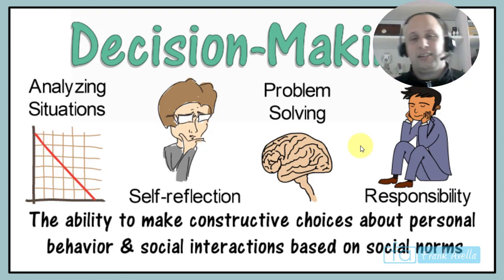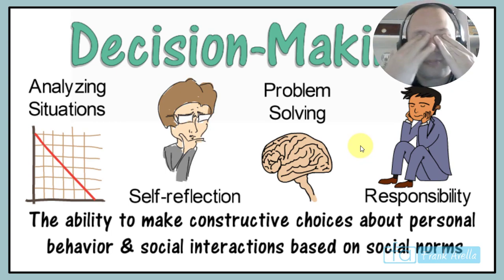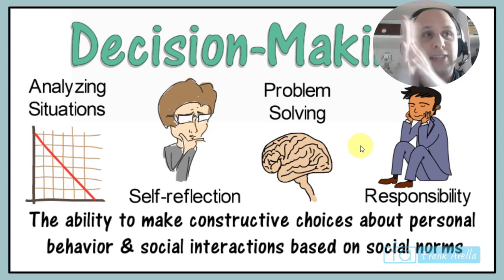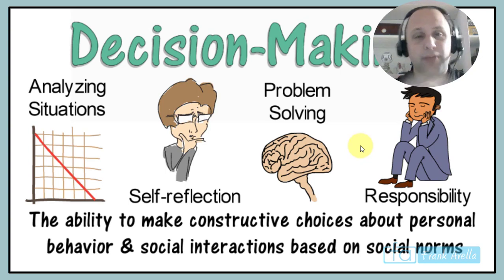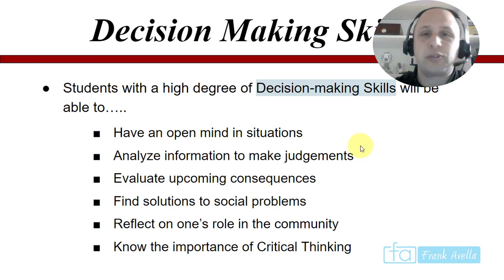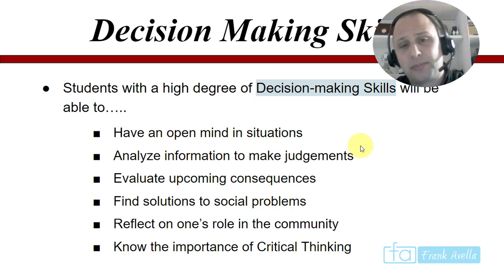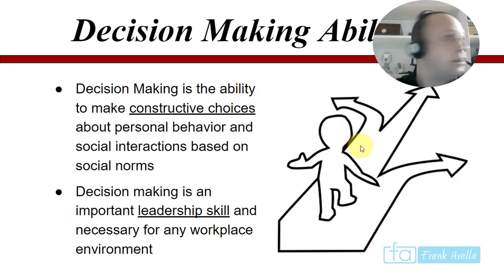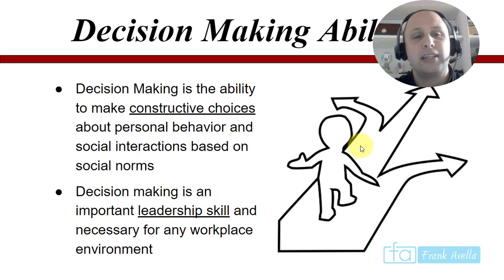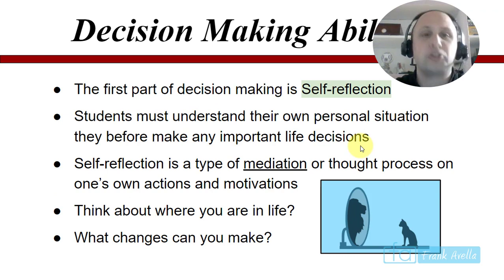The last competency is decision making. Students with a high degree of decision making will be able to have an open mind, analyze information and make the right judgments, find solutions to social and complex problems, reflect on their own role in the community, and know the importance of critical thinking. Decision making is the ability to make constructive choices about personal behavior and social interactions. It's an important leadership skill, necessary for any workplace. The first part of decision making is self-reflection — students must understand their own personal situation before making any important life decisions.